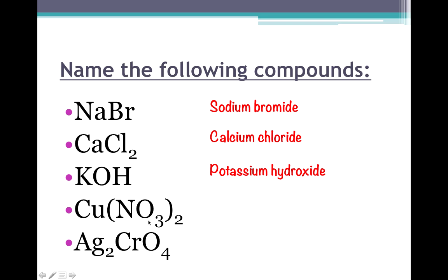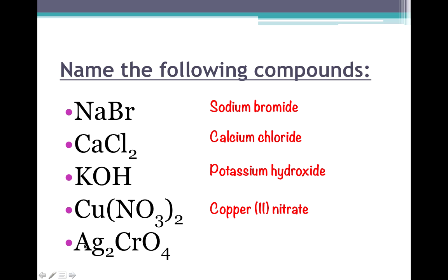The next example also has three capital letters, so it has a polyatomic. Looking at the last two capital letters, NO3 is nitrate. There are parentheses around the nitrate with a two on the outside, meaning there are two of the entire nitrate groups. The first part is copper, and looking at the list, copper can have one or two charges. One nitrate has a charge of negative one, and since there are two of them the total charge is negative two. For the ionic compound to have a total charge of zero, copper must be copper plus two. So this is named copper(II) nitrate.